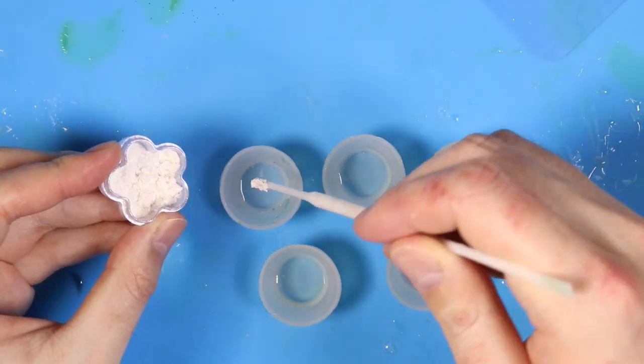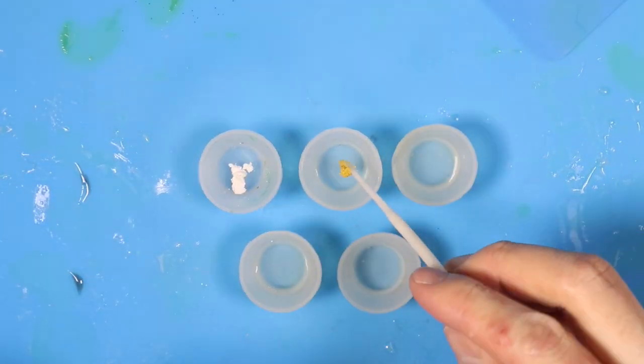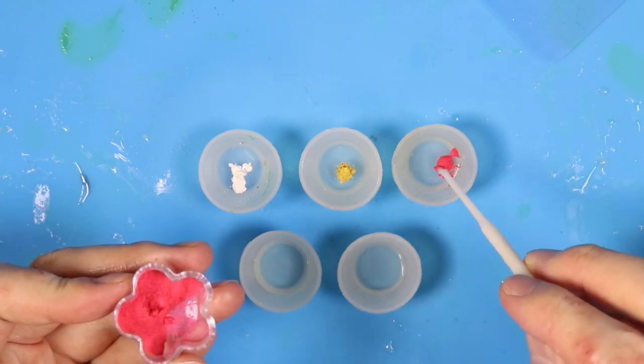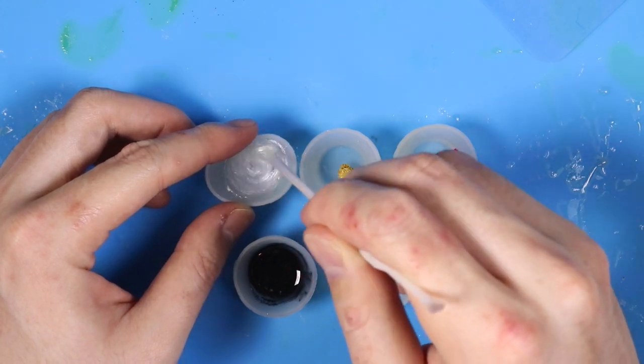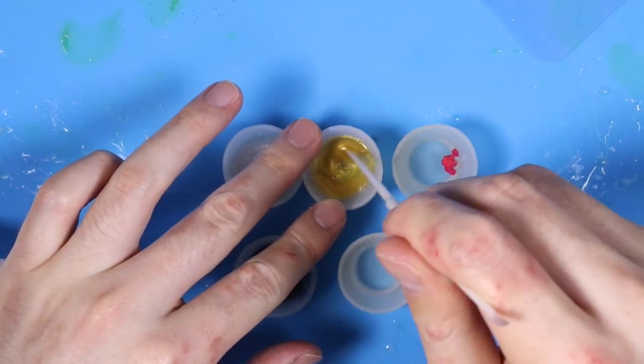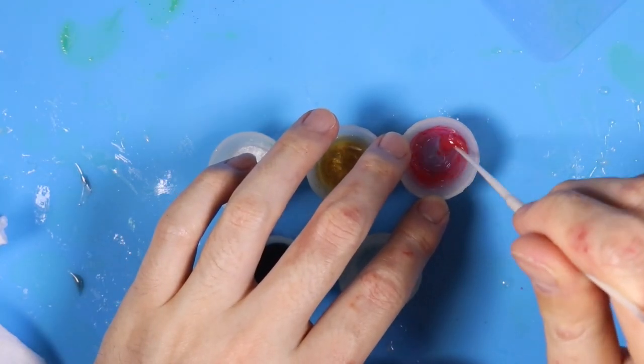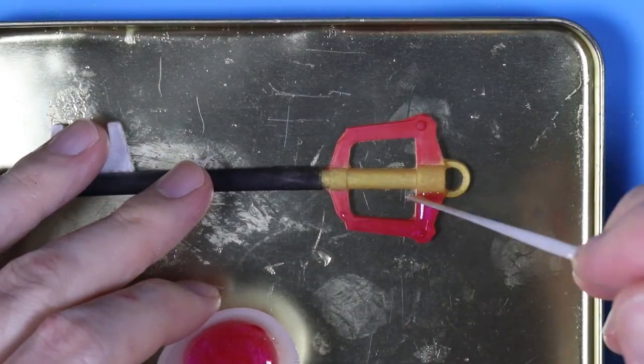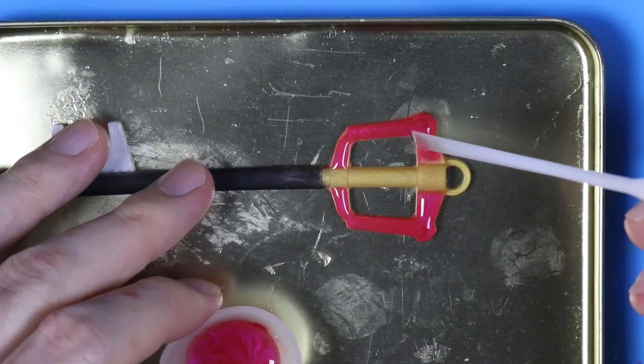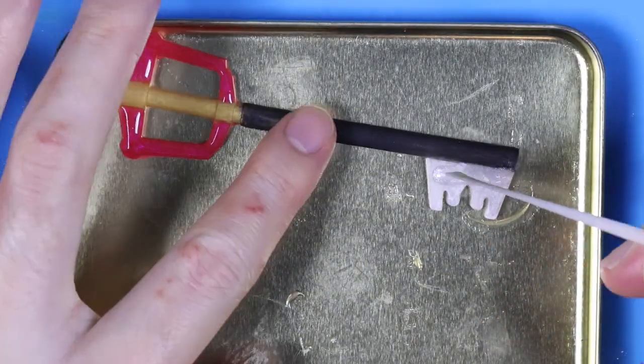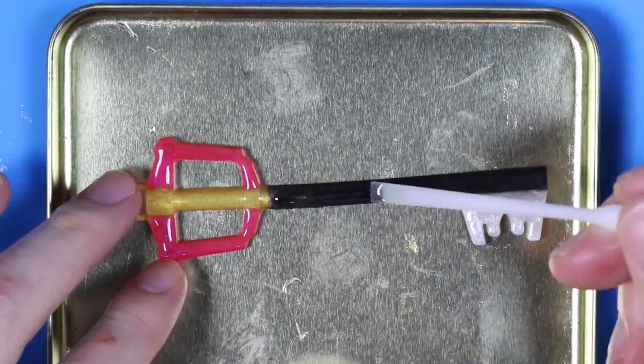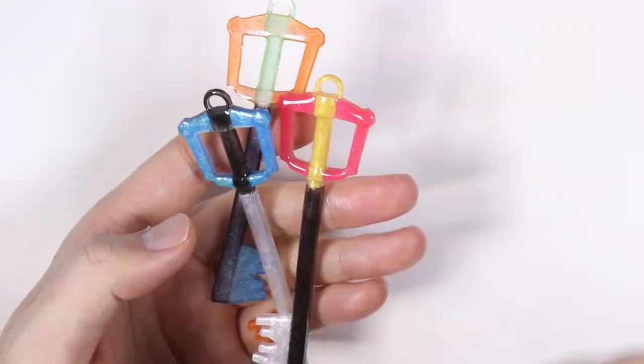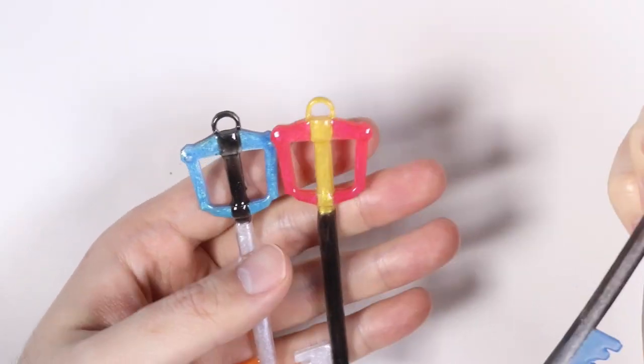And I kind of wanted the keys to be a little bit more vibrant. I felt like it wasn't as vibrant as I wish it had been. So I mixed some UV resin with the pearl pigments and I used that to dome the parts of the keys according to their color. And here are the three keys all nice and domed.